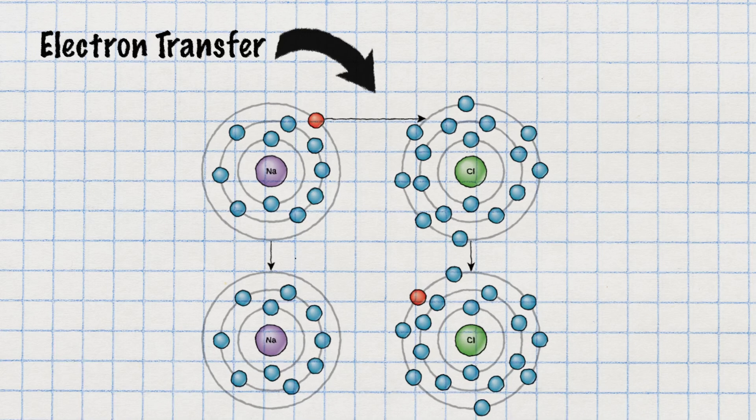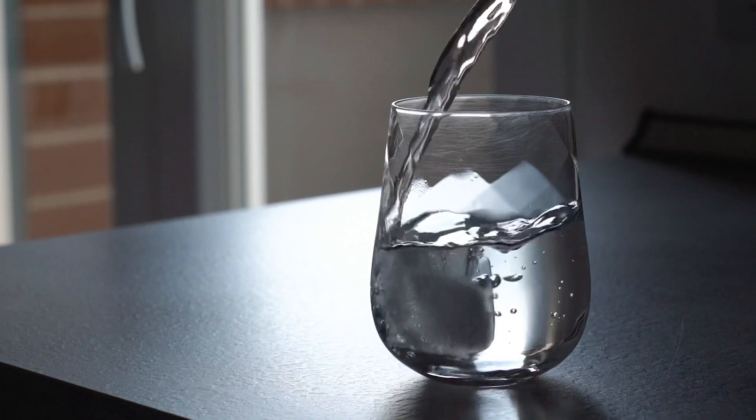Atoms can either share or transfer electrons to form chemical bonds. It's the valence electrons and their interactions that form the countless compounds and molecules that make up everything around us — from the water you drink to the air you breathe. Although the Bohr model has limitations and has been superseded by more advanced theories like quantum mechanics, it's still very useful in an introductory biology class to understand the basic structure of an atom and the importance of energy levels and valence electrons in chemical bonding.